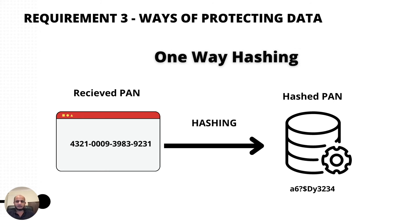Another option for storage is one-way hashing — a cryptographic process that converts your data into a different string. Every time you apply it to a PAN it produces the same result, and it's irreversible, so you can't derive the card number back from the hash. People often use it to check whether data has been modified, but you can also use it for storage. Just remember: because it's irreversible, you cannot use the hashed value for future transactions.